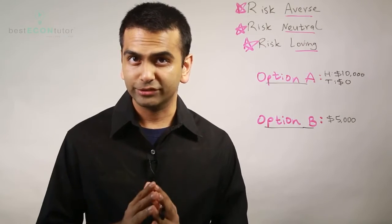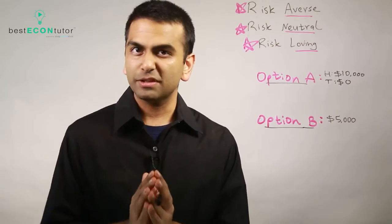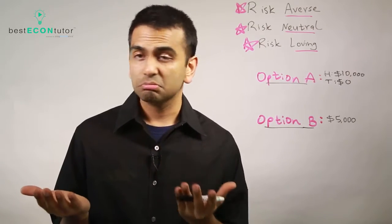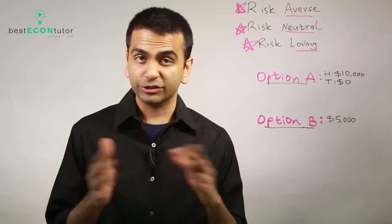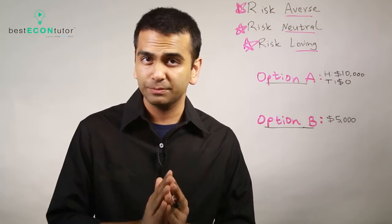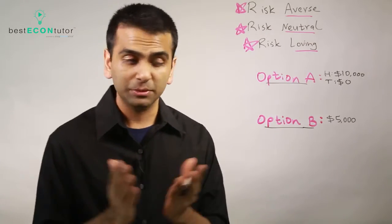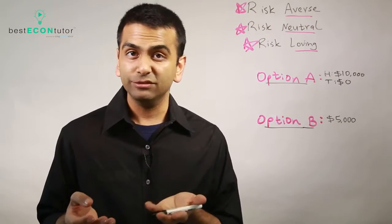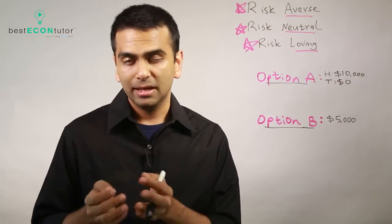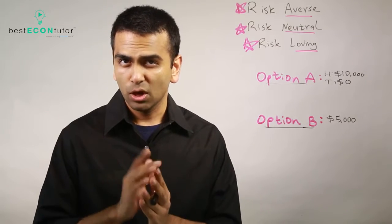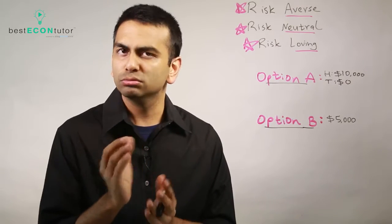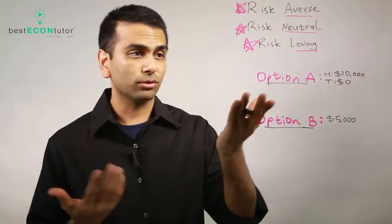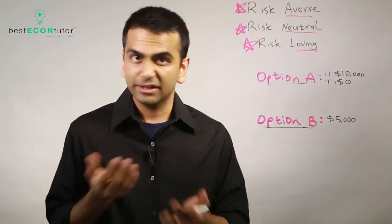Let's first talk about risk. Imagine somebody you know wants to help you out financially and they give you two options. Option B: they just give you five thousand dollars, no questions asked, no strings attached. Or Option A: flip a fair coin — heads you get ten thousand dollars, tails you get zero.